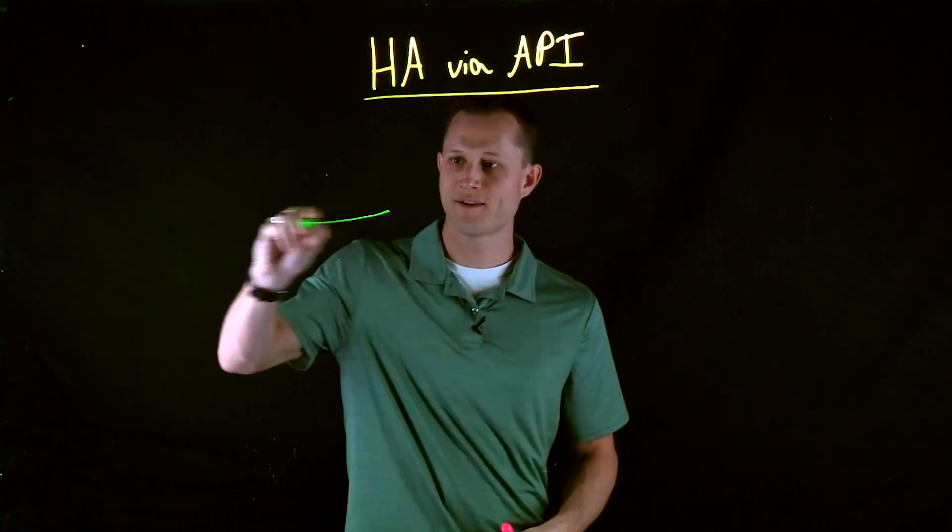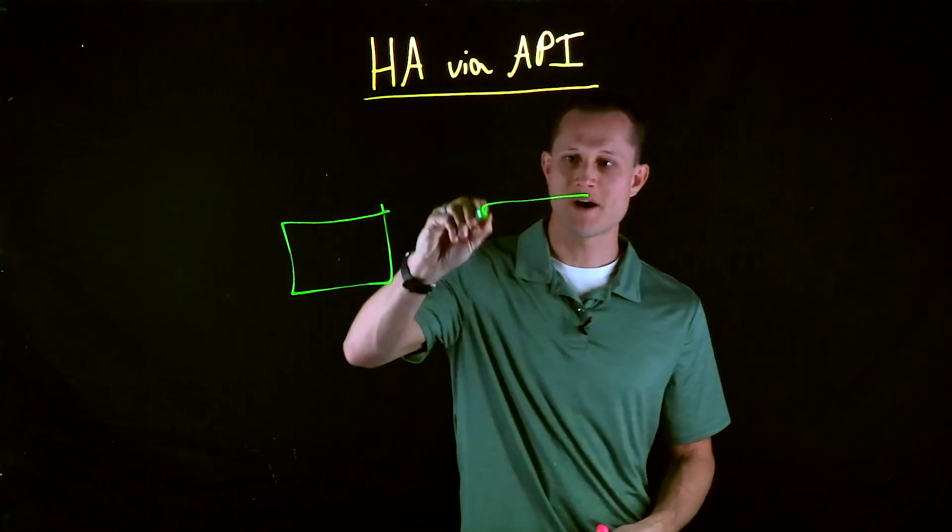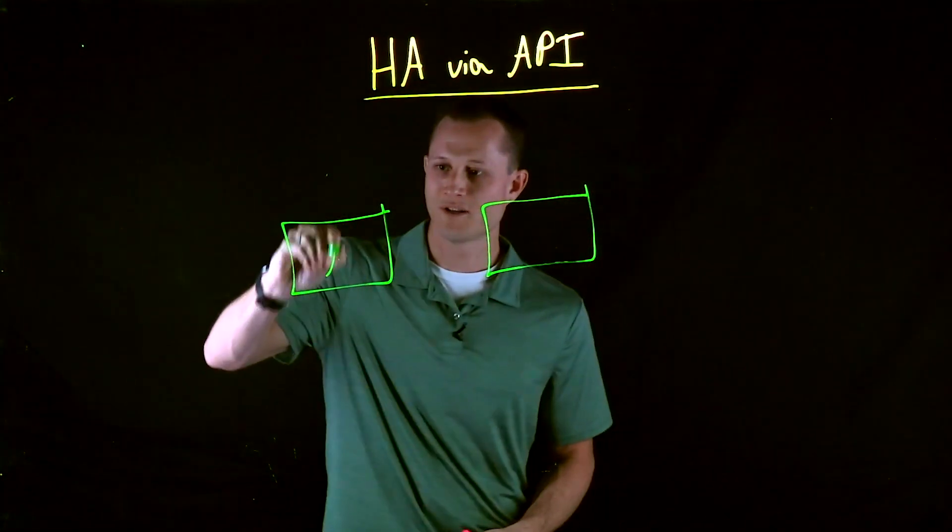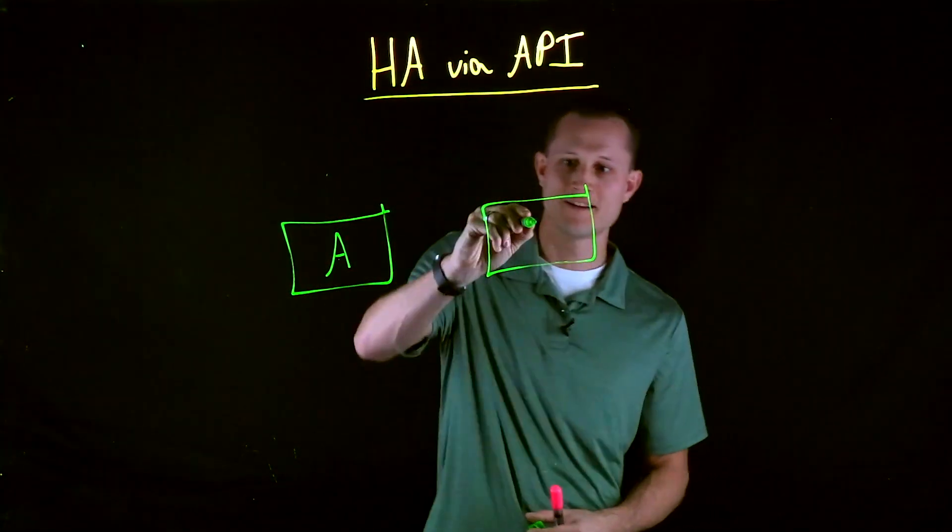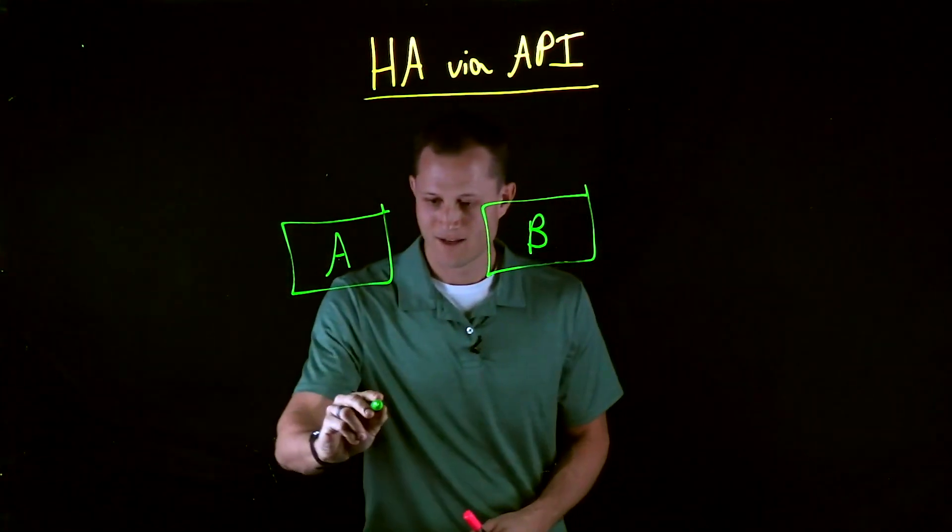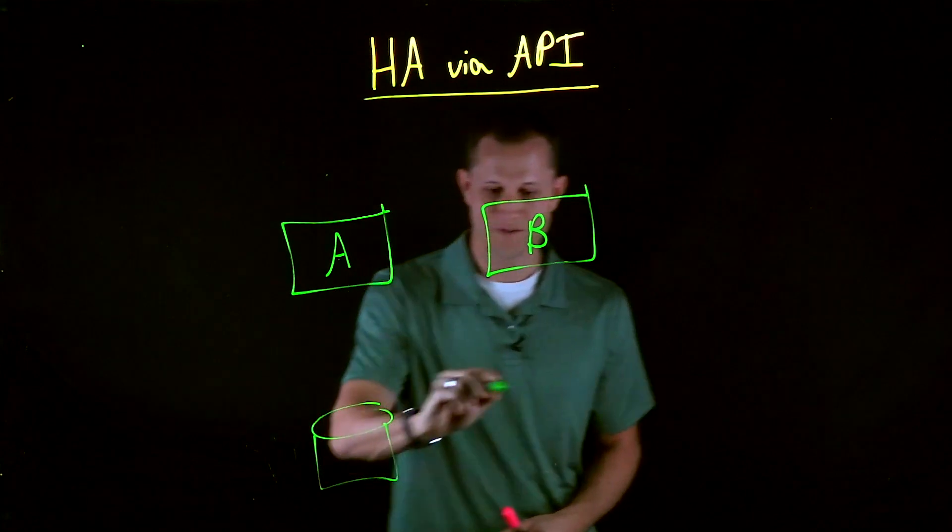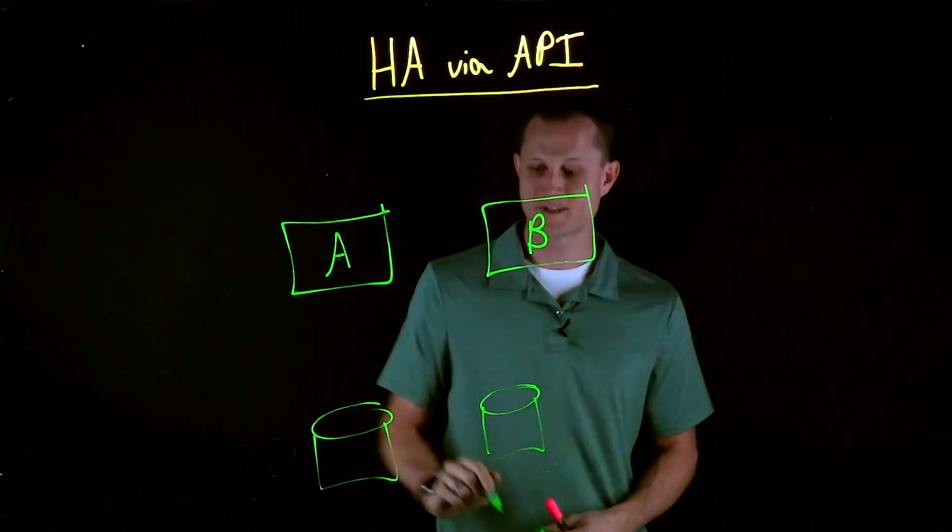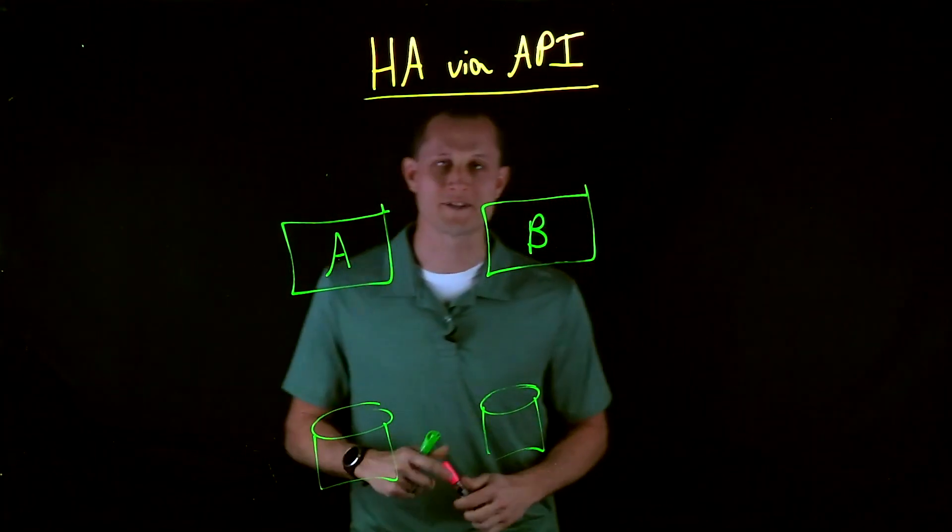I'll start off with two F5 boxes. This one is going to be Unit A. This will be our active box. This is Unit B, and this will be our standby box. I'll quickly draw some servers just for application visual representation. Then we'll talk about some of the requirements here.